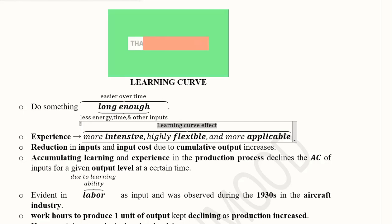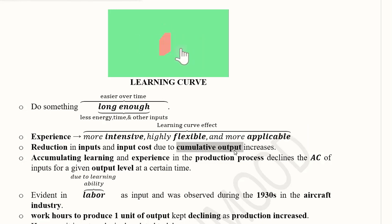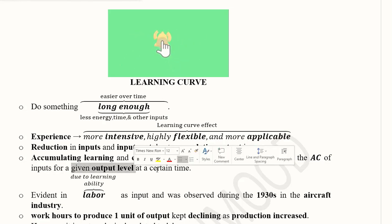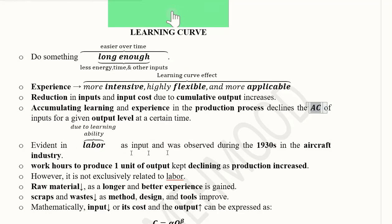A reduction in inputs and input costs happens as we produce more and more output. This accumulation of learning and experience in the production process basically declines the average cost curve of inputs for a given output level at a certain time. So the same level of output can be produced at a declining level of average cost. This concept originates from the 1930s, observed because humans have the learning ability.